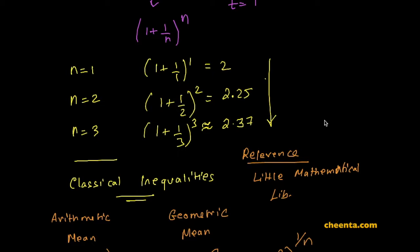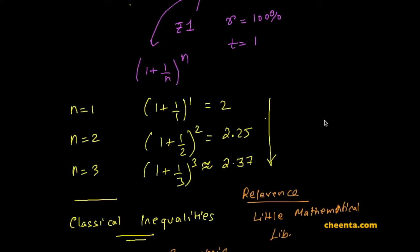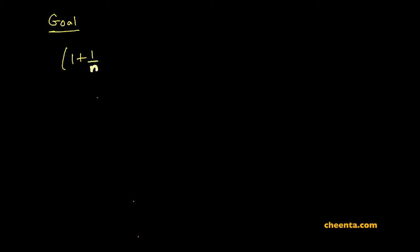Coming back to the AM-GM inequality, we want to apply it to prove that (1 + 1/n)^n is a monotonically increasing sequence. Let's go to a new board. Our goal is to show that (1 + 1/n)^n is monotonically increasing.